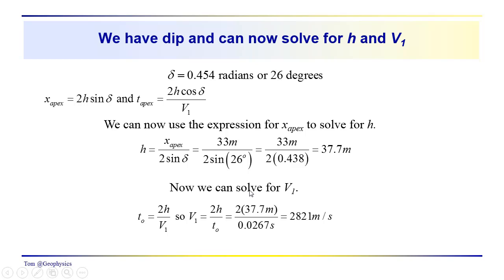So now we can easily solve for v1. We have this simple relationship here for the intercept. t0 is equal to 2h over v1. So we just rearrange that. We get v1 is equal to 2h over t0. This is equal to about 2,821 meters per second. That's what I got.